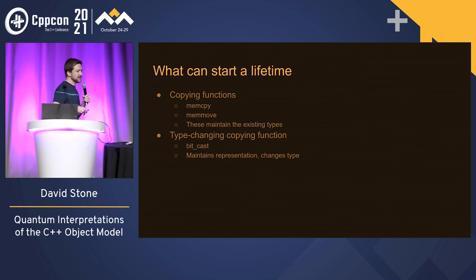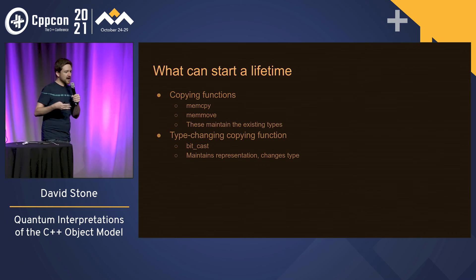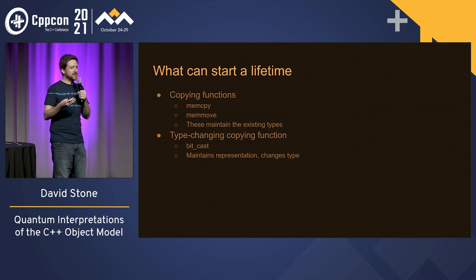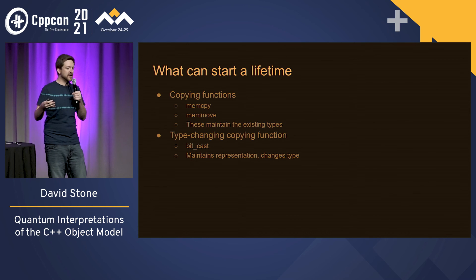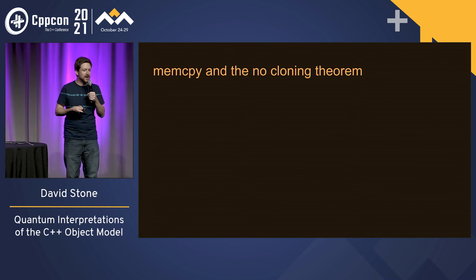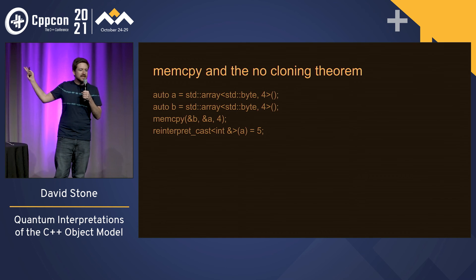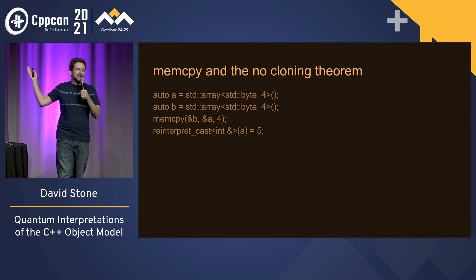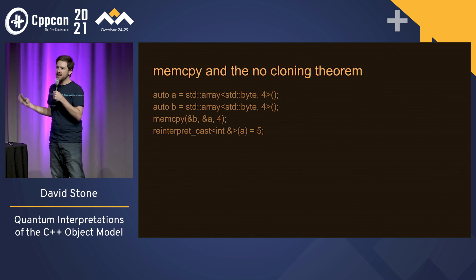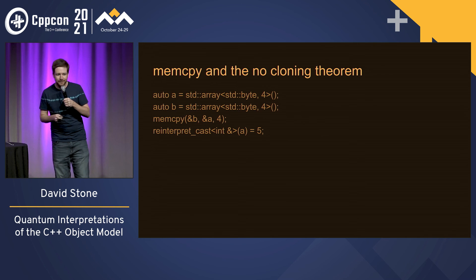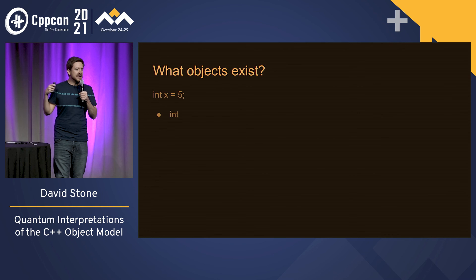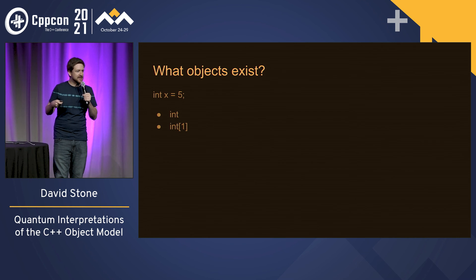So, what can start the lifetime of an object? We can use mem copy functions — mem copy, mem move — these maintain the existing type. Or we can have type-changing copying functions like bit cast; these copy the bits maintaining the representation but they change the type. There is mem copy and the no-cloning theorem: in this example, we know that the type of A is int, and this means that the type of B is int because the two states are entangled. So, what objects exist? In this example, we say int x equals 5. And my time is up here.